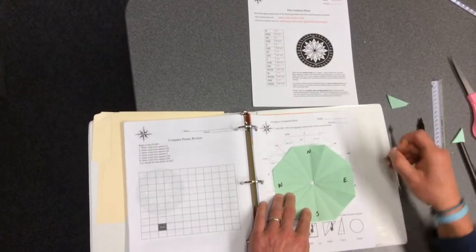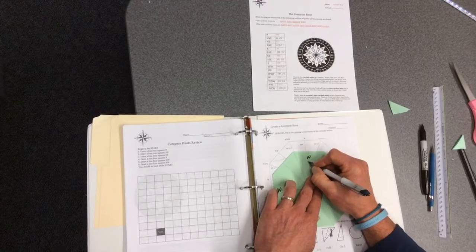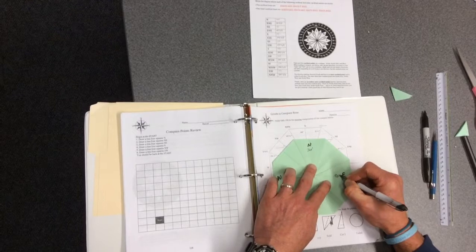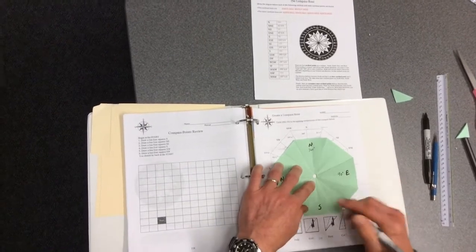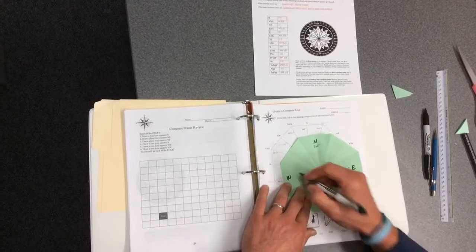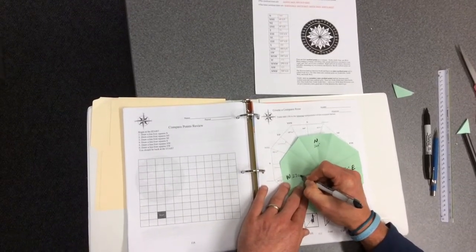Now underneath the North you're going to write in the degree 360. For the East, write in the degrees 90. For the South, 180. And for the West is 270.